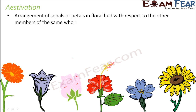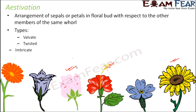The way the petals are arranged in one flower can be very different from another. Aestivation talks about those different arrangements of sepals and petals. There are four types of aestivation: valvate, twisted, imbricate, and vexillary.